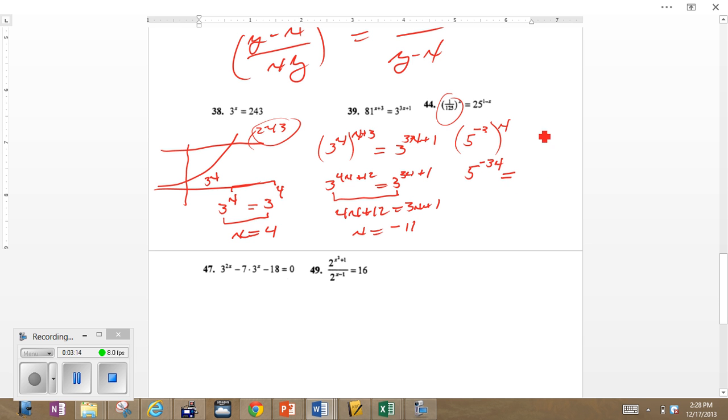It equals, that's 25 which is 5 squared to the power 1 minus x, which of course is 5 to the 2 minus 2x. So now we've managed to equate the bases, let's equate the exponents now.